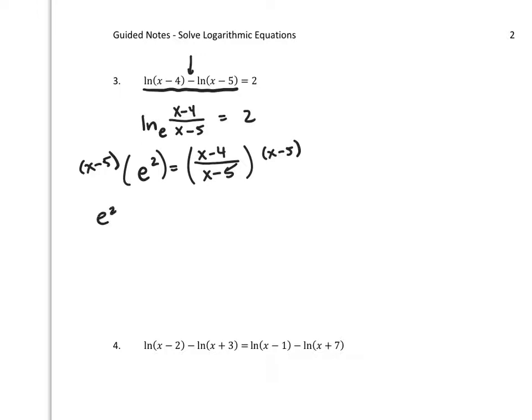So that's e^2 times (x-5) equals (x-4). Let's clear our parentheses on the left. That's e^2 times x minus 5e^2 equals x - 4.